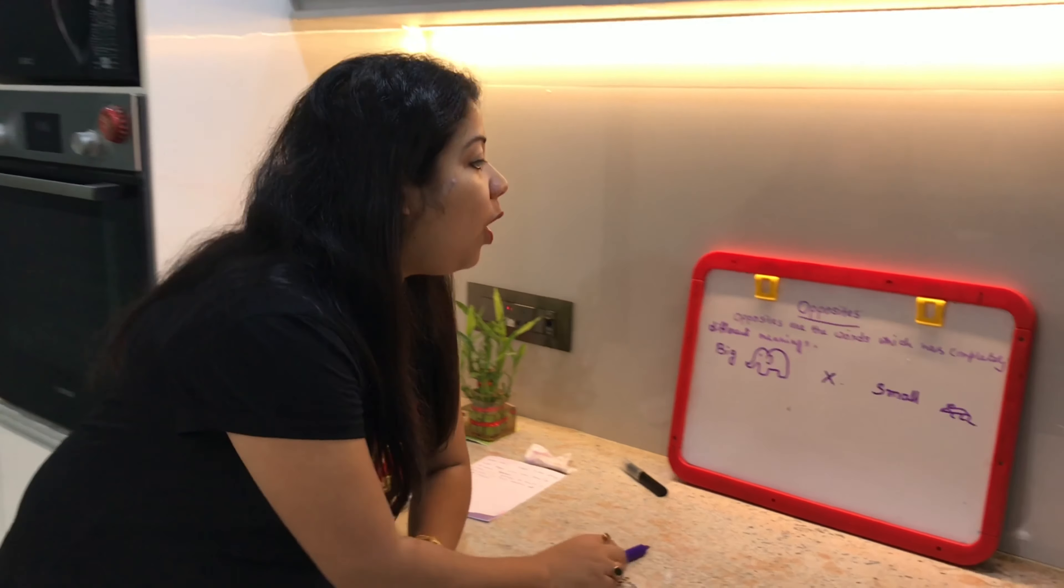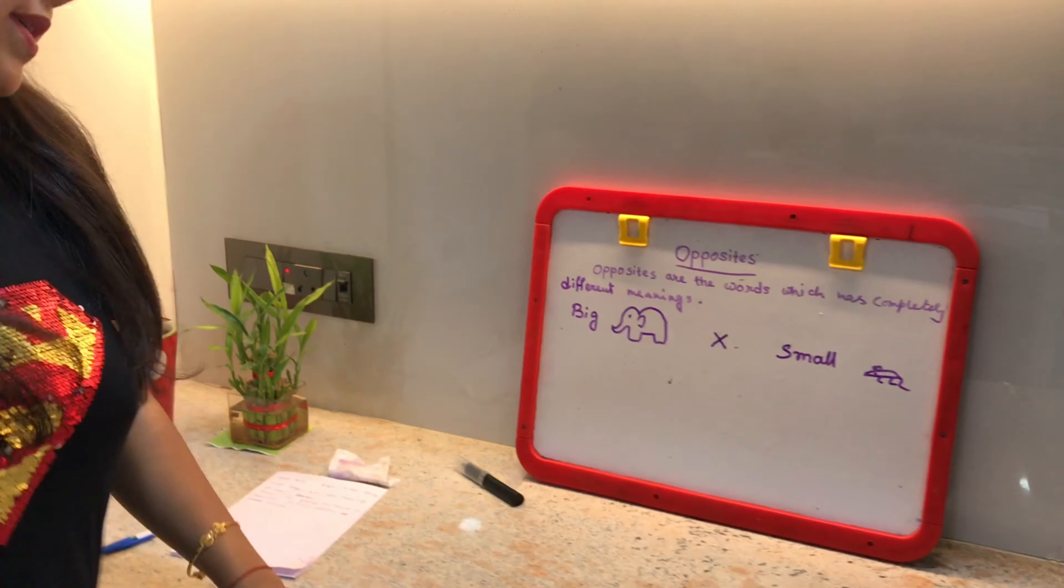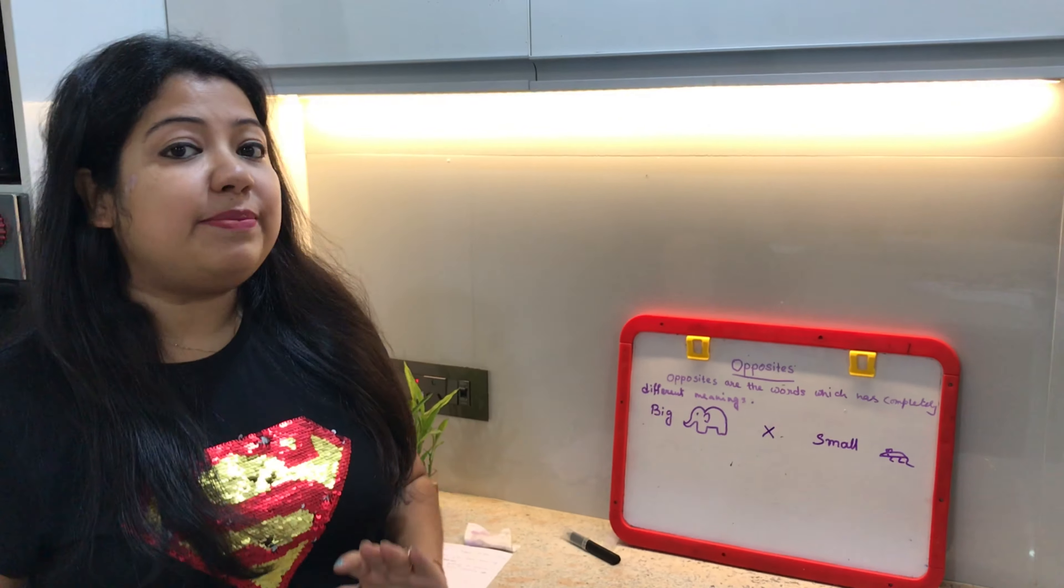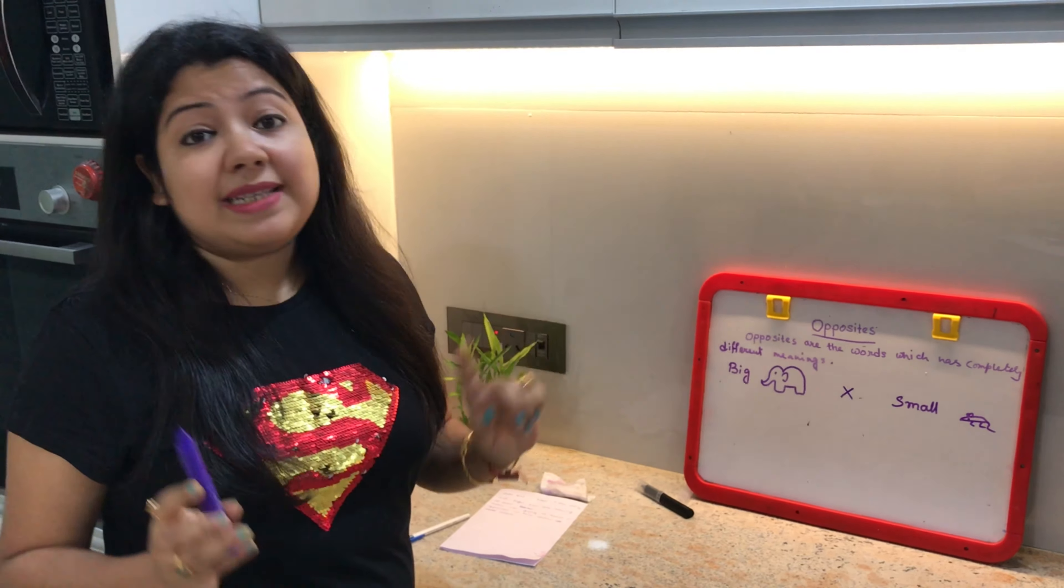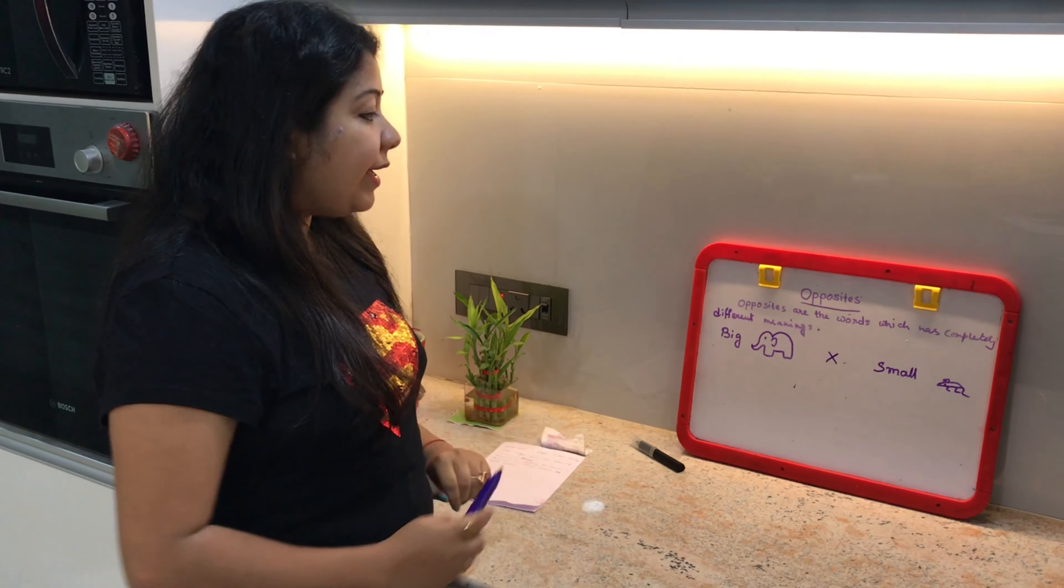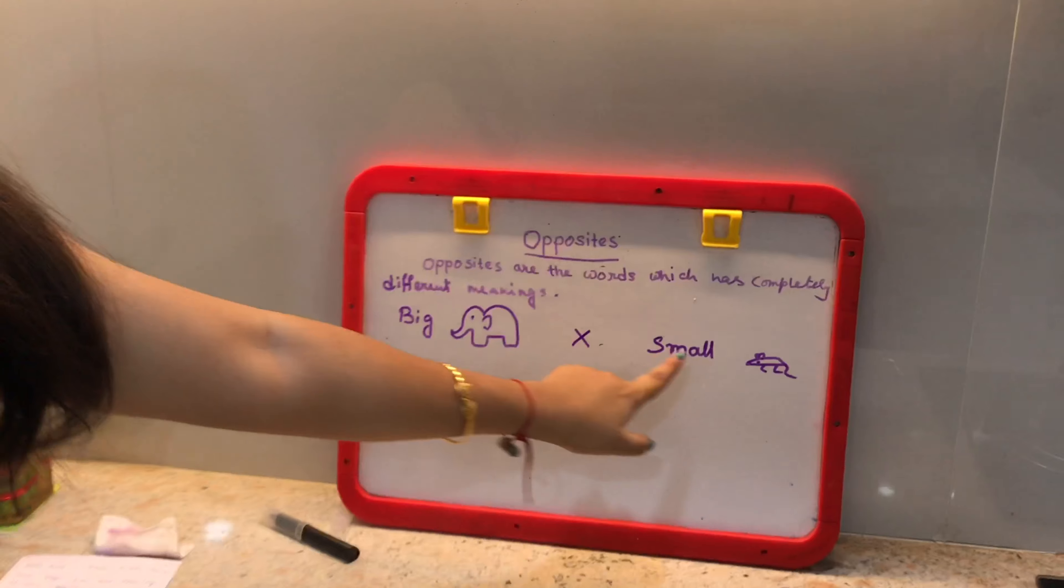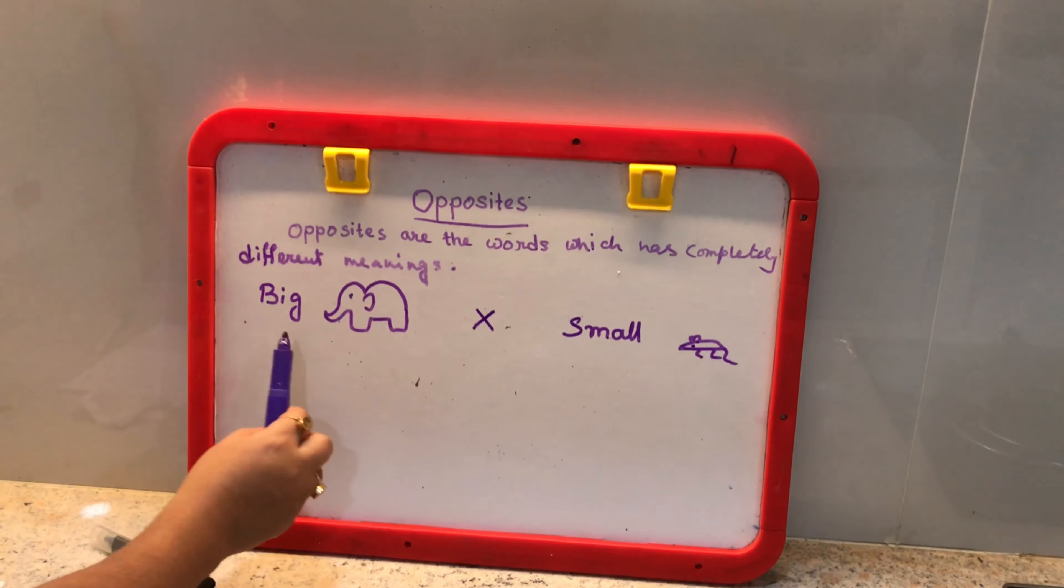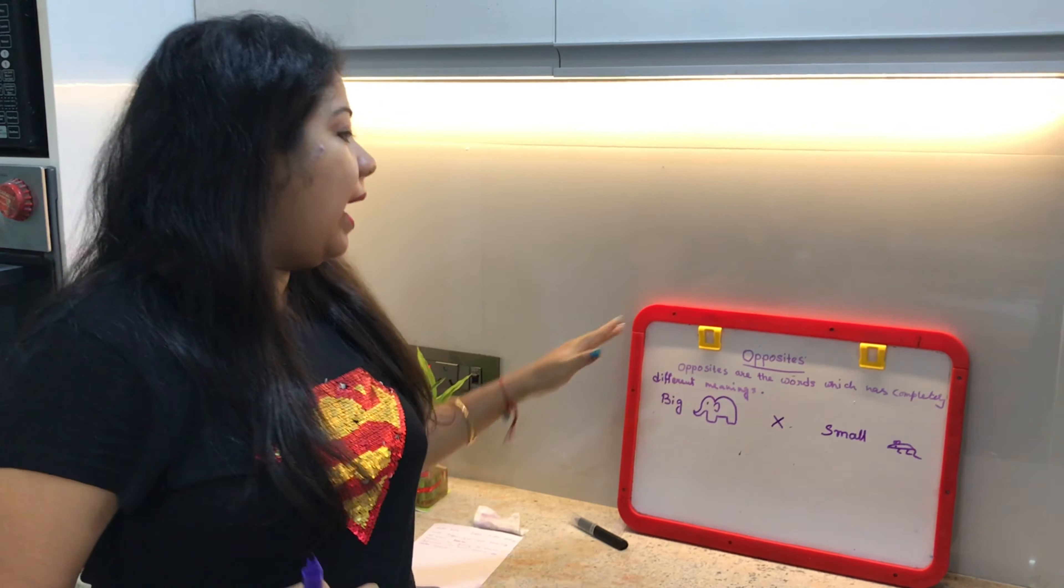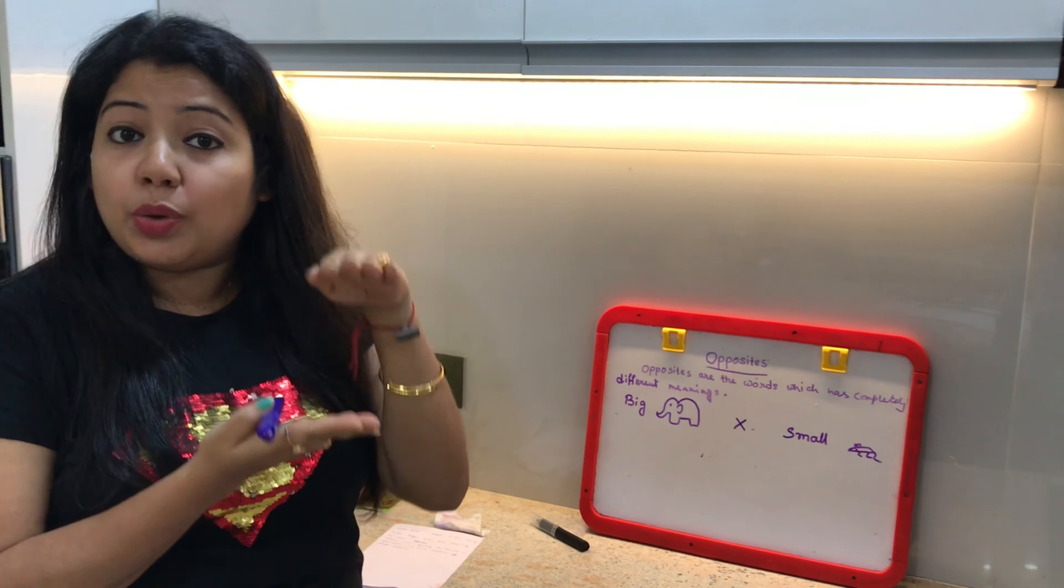Opposites - what are opposites? Opposites are words which have completely different meanings, which are not similar. They are completely different. For example, big and small. Big means huge, bodo, bada, and the opposite is small, chota.